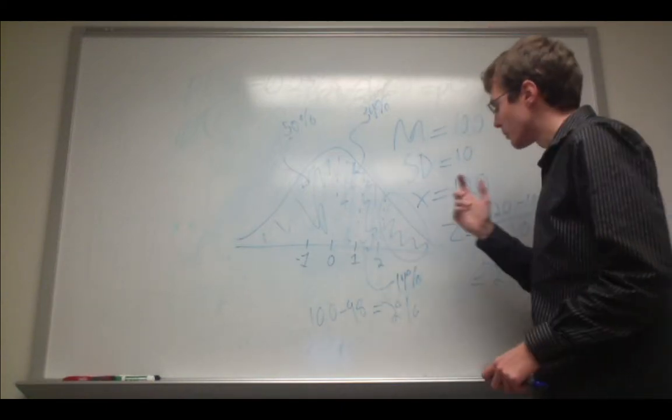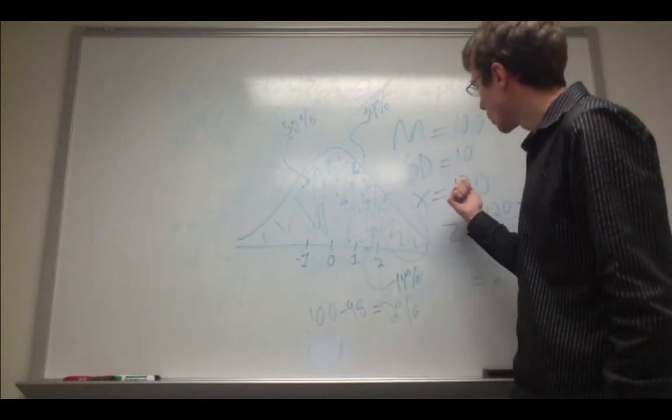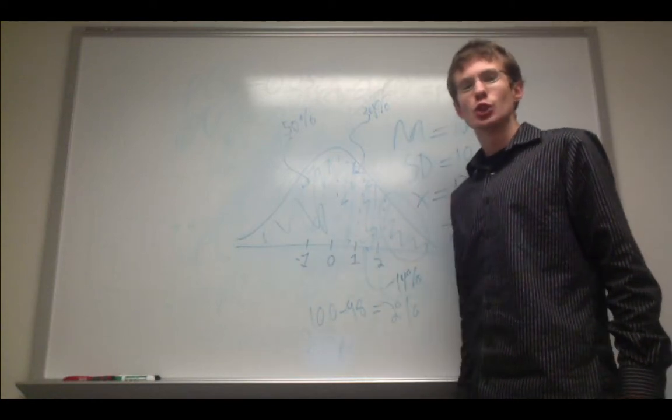We can rephrase this as: the probability of randomly selecting somebody from the population who scored 120 or greater is 2%.